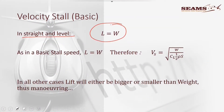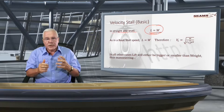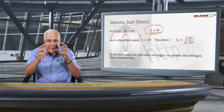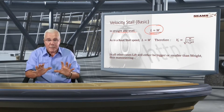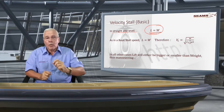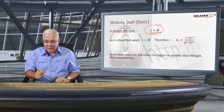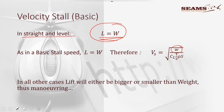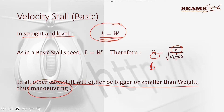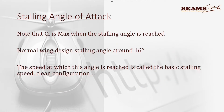Because lift equals weight and weight is a constant, when we're in that straight-and-level case we call the speed VS or VB — the basic stalling speed. Someone might ask: when you pull G's, doesn't weight increase? No — the weight stays exactly the same; it is the apparent weight that changes, and we're not discussing that here. In all other cases where lift is either bigger or smaller than weight, that is maneuvering, and we then talk about the maneuvering stalling speed.